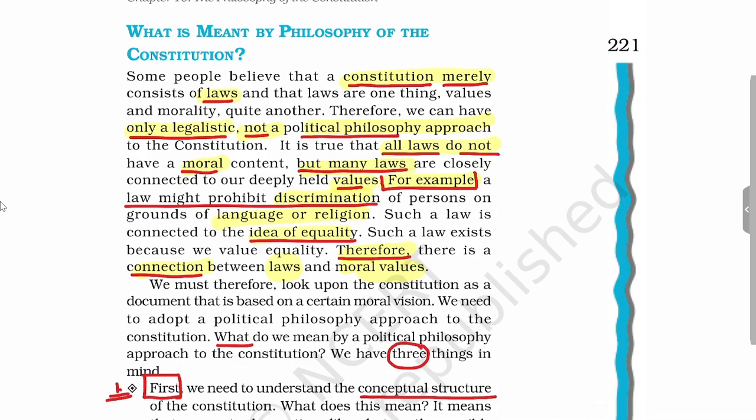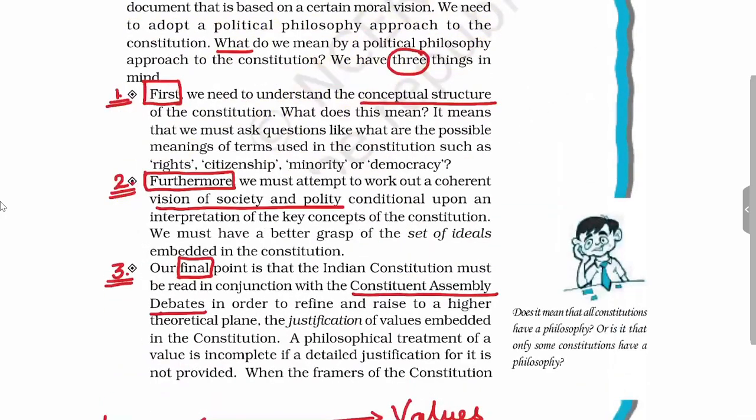Now we'll see what the political philosophy approach to the Constitution means. When we say this, we have three things in mind. First, the conceptual structure — what is the conceptual structure of the Constitution? This we can analyze by examining the meanings of terms such as rights, citizen, minority, and democracy.